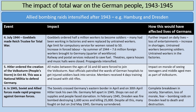In July 1944, Goebbels was made Reich trustee for total war. Goebbels ordered half a million workers to become soldiers — many had been working in factories and were replaced by untrained workers. The age limit for compulsory service for women was raised to 50. There was a massive increase in forced labour. By the summer of 1944, 7.6 million foreign workers were brought to Germany from places like France and the Netherlands. Railway and postal services were reduced to save fuel. Theatres, opera houses and music halls were closed. Propaganda intensified. There was a huge impact on daily lives — loss of entertainment, increasing shortages, and untrained workers in both the military and the factories.